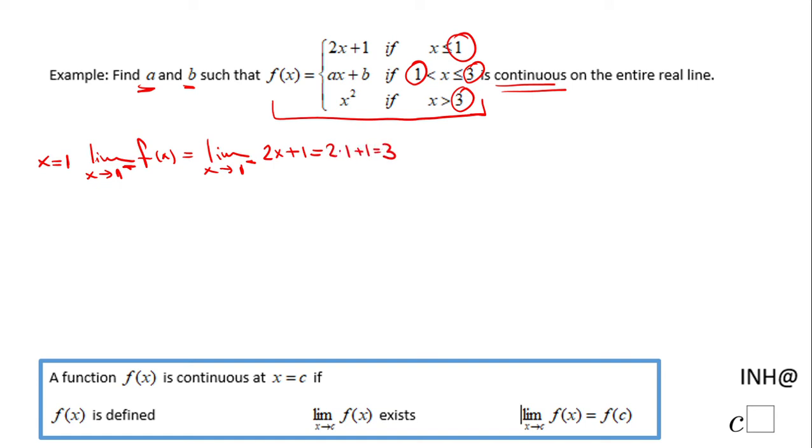The limit when x approaches 1 from the left is 3. Let's do the limit when x approaches from the right side. That will give us the second piece of the piecewise function, ax plus b. We're going to replace x with 1, and we have a times 1 plus b, which is a plus b.